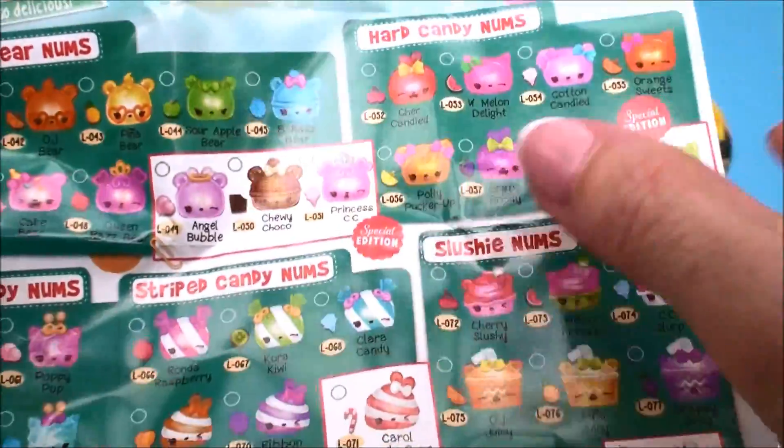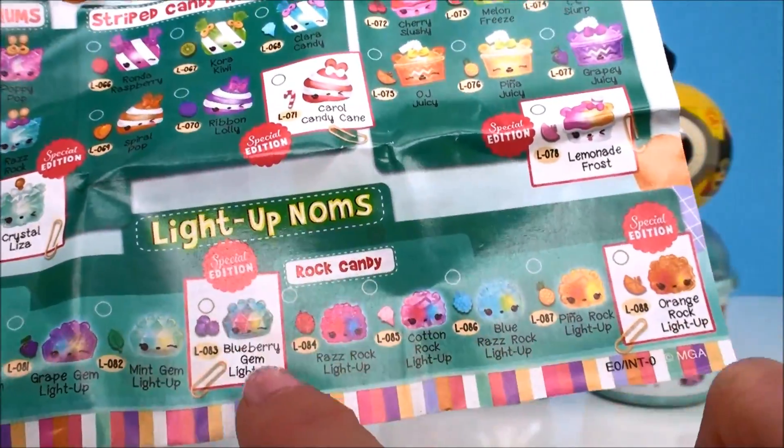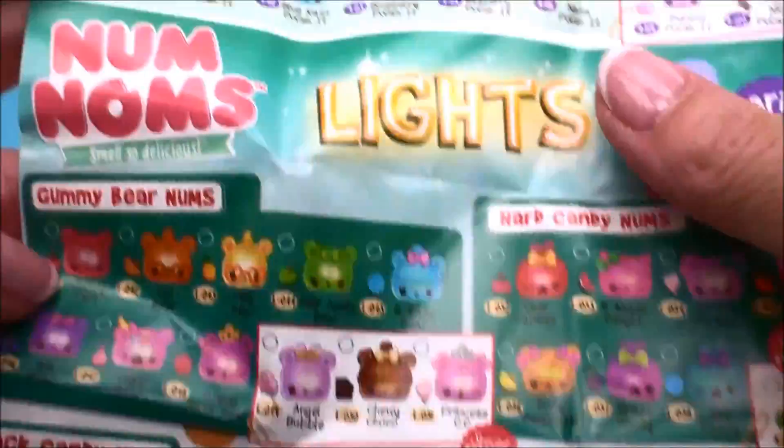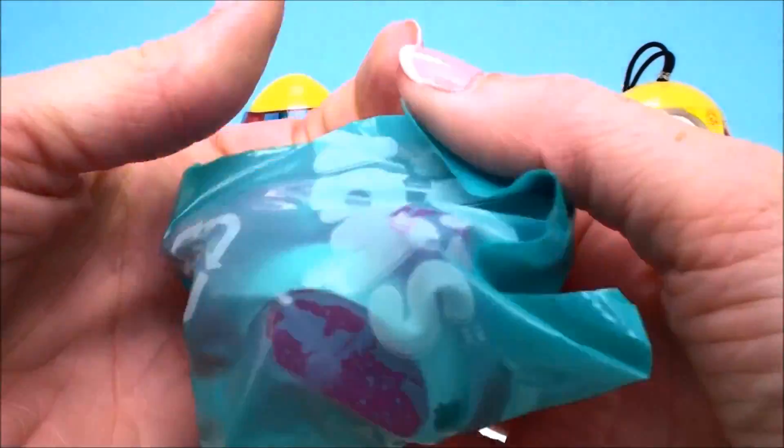There's gummy bears, hard candy, striped candy, rock candy, slushies, gem. There's some special edition ones that we can try to get. So let's just see what we got and I'll show you that ring. It's super cute.